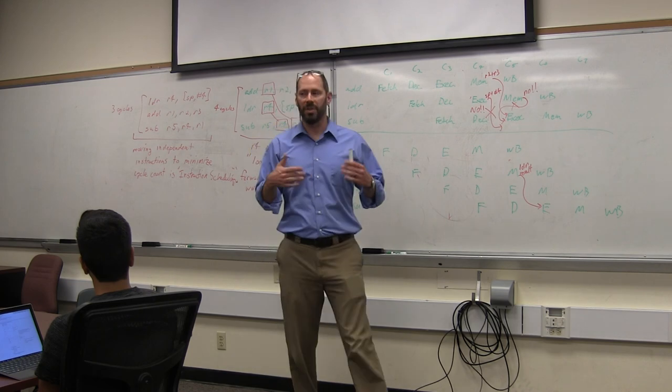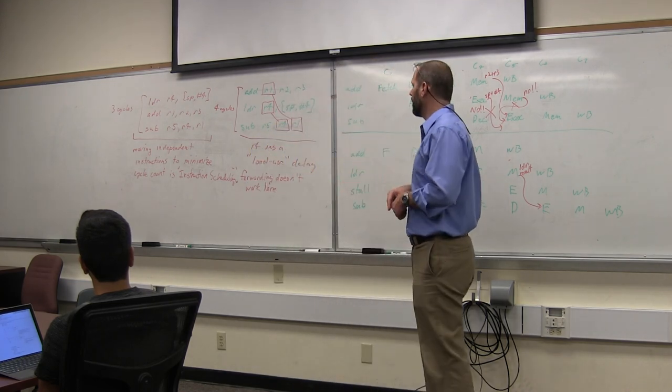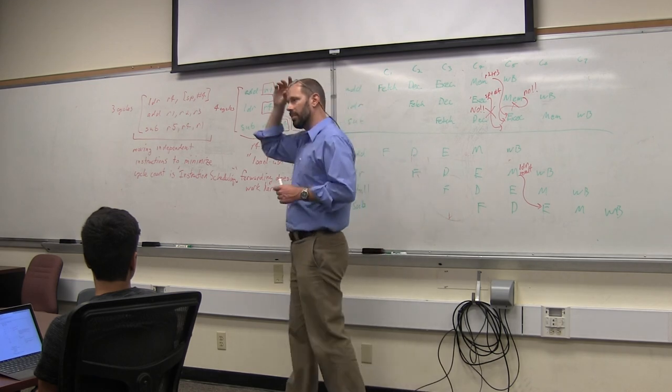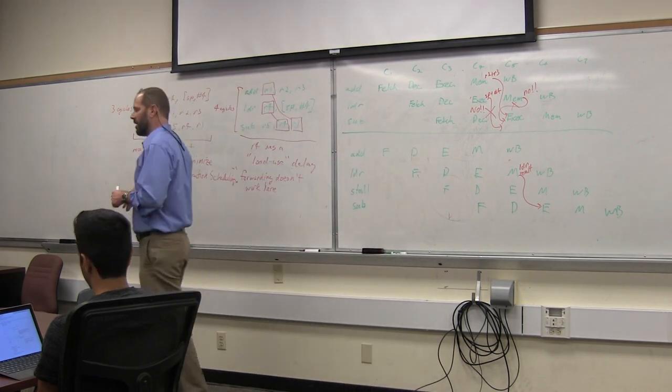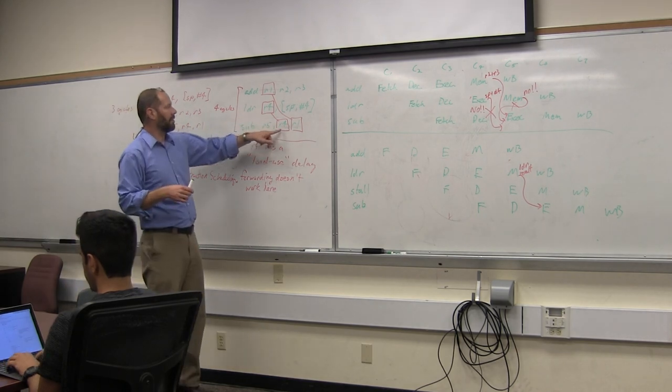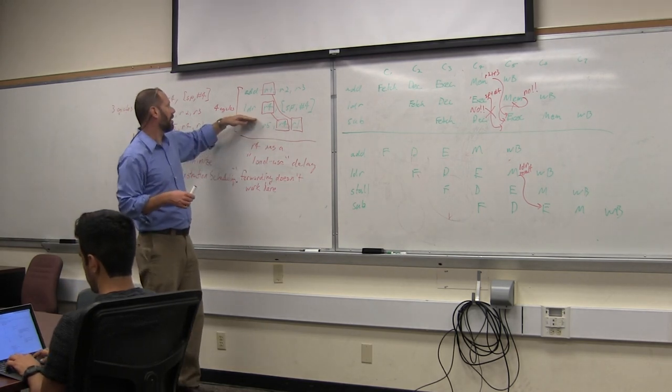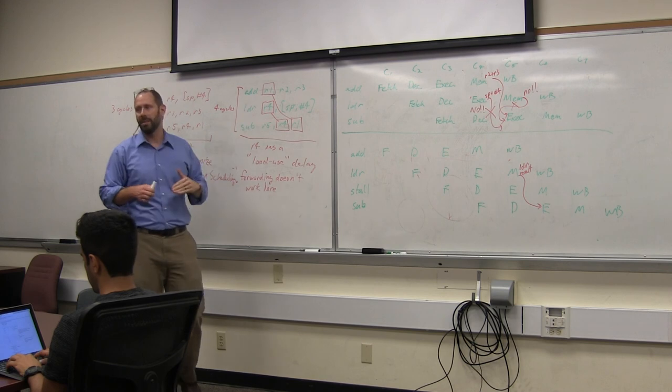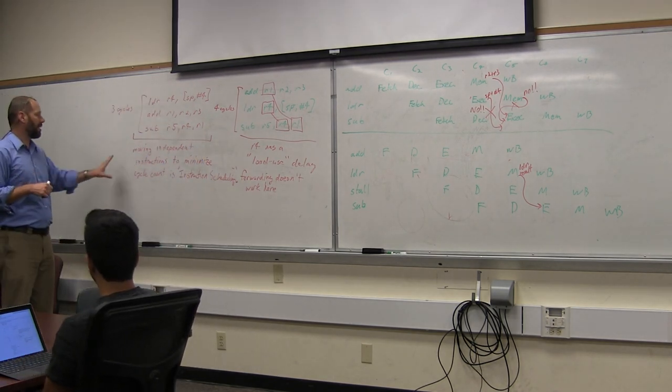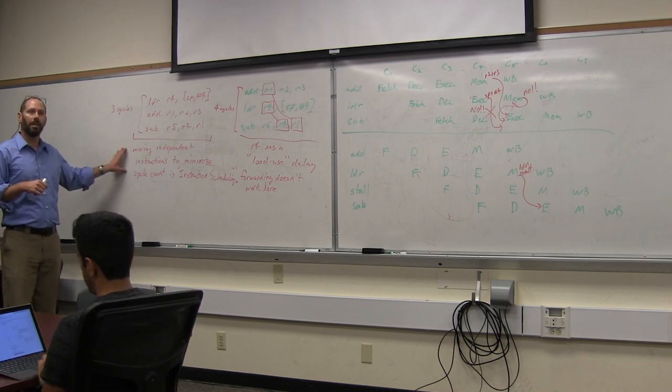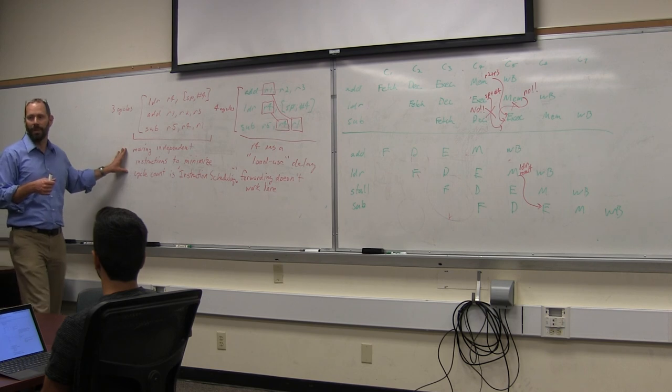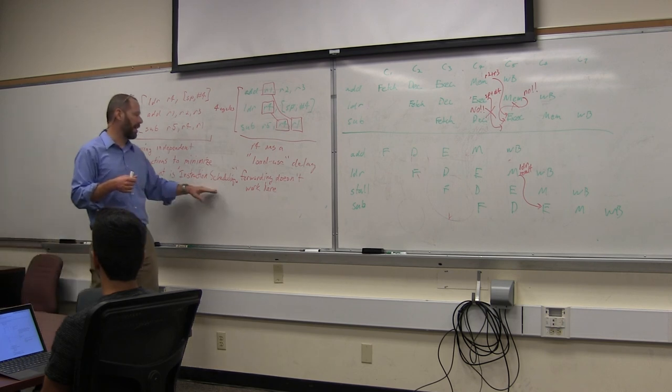This process of moving independent instructions, to be more precise, moving independent instructions to minimize cycle count is instruction scheduling. Now, for you, the student assembly language programmers, I'm going to make you identify these independent instructions and move them around. And you can kind of just do it by sight, right? Like, oh, that one generates a result that is used by the subsequent, oh, that means a delay here and this one's independent so I can move it in. Right? It actually turns out that this is an algorithmically hard problem. It's an NP-hard problem. And this is done by the compiler.